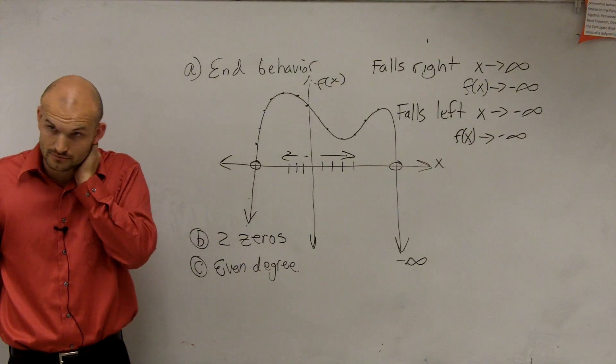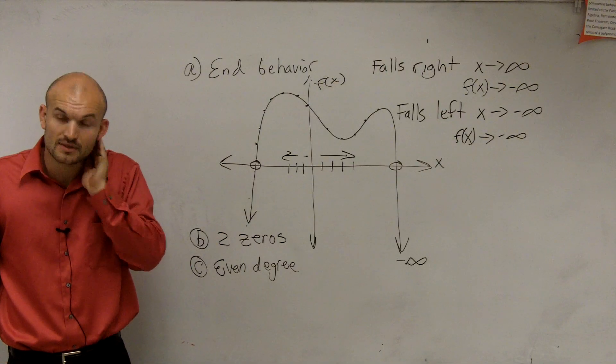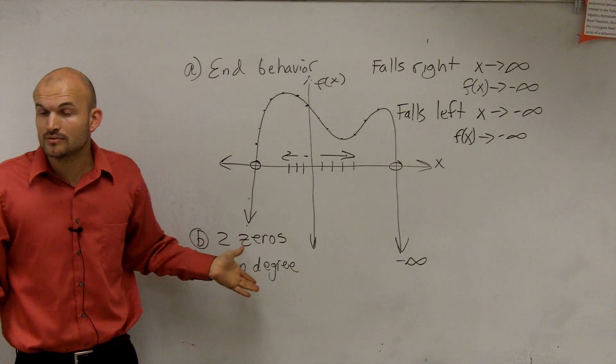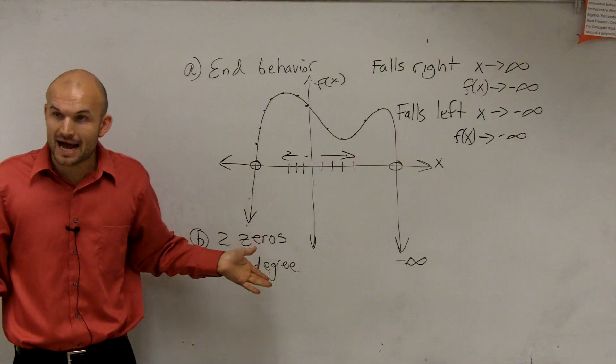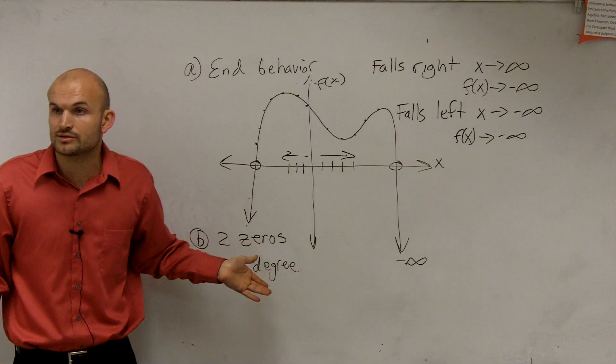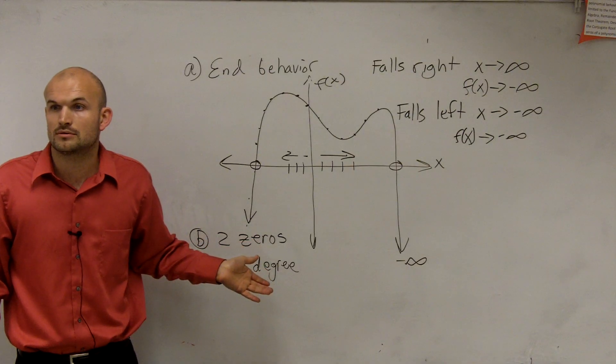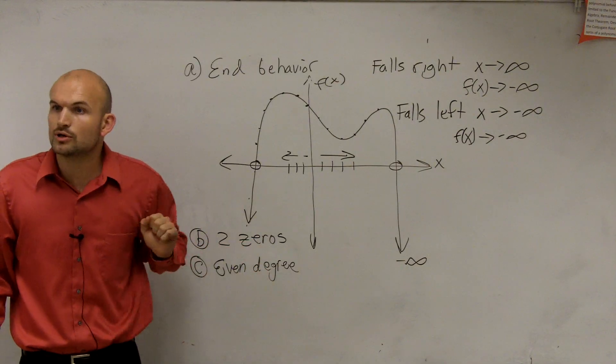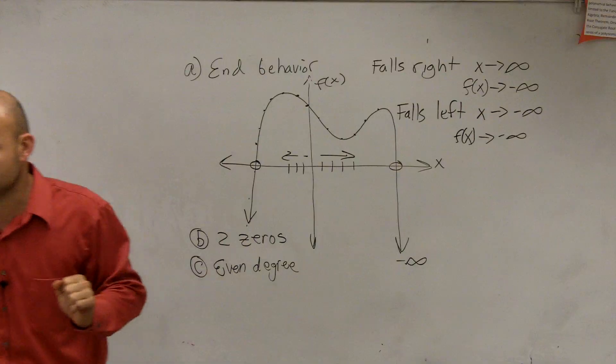A student asks: would it be odd? If you had an odd number of zeros, then yes, you would have an odd degree function. We'll go over an odd one next.